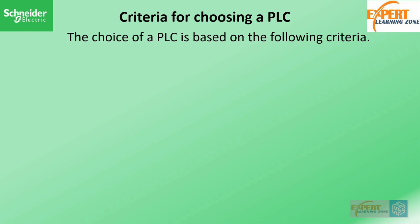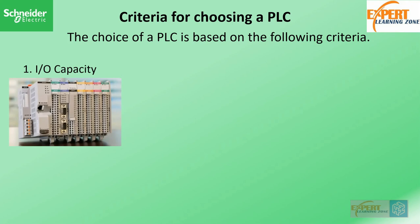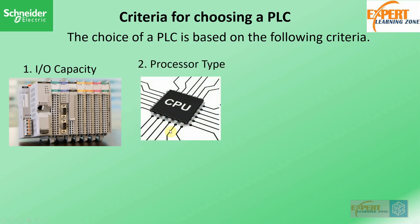With that in mind, we are now going to look at the criteria for choosing a particular PLC. First is the input/output capacity — the number of I/O variables the PLC can process must be greater than or equal to the number of I/O variables in the system. The second is the processor: factors influencing this decision include memory size, speed of information processing, and special functions. For example, in Siemens PLCs, the S7-200 series does not have the same processing capability as the S7-1200 or S7-1500 series.